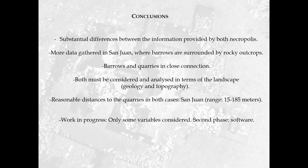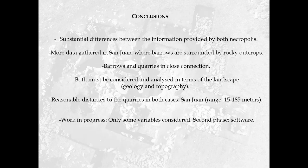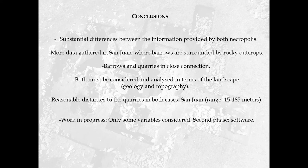There are remarkable differences between the information provided by both cemeteries. More data have been gathered in San Juan, where barrows are surrounded by rocky outcrops. However, barrows and quarries are in close connection in both cases, justifying the presence of rocks of different sites in the barrows of both cemeteries. Both must be considered and analyzed in terms of landscape, as geological elements and topography divide the territory, probably establishing differences between the three areas identified. We have to emphasize the reasonable distance to the quarries in both cases — in San Juan, the range is very convenient: between 15 metres and 185 metres of distance.